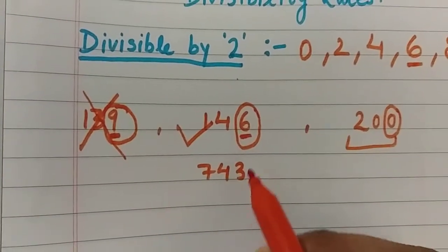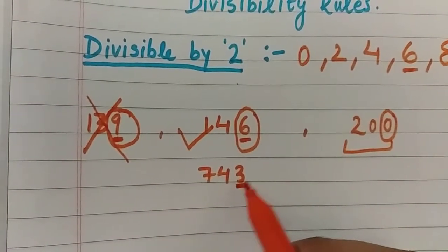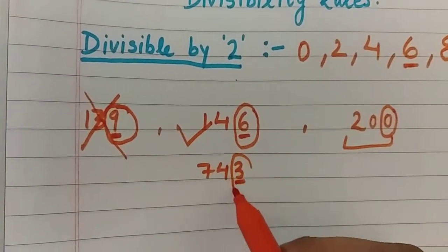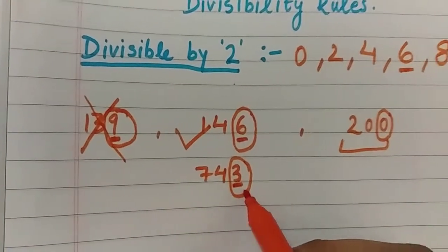Now 743. What is the ones place digit? It is 3. The digit 3 is not in the list 0, 2, 4, 6, or 8, so 743 is not divisible by 2.